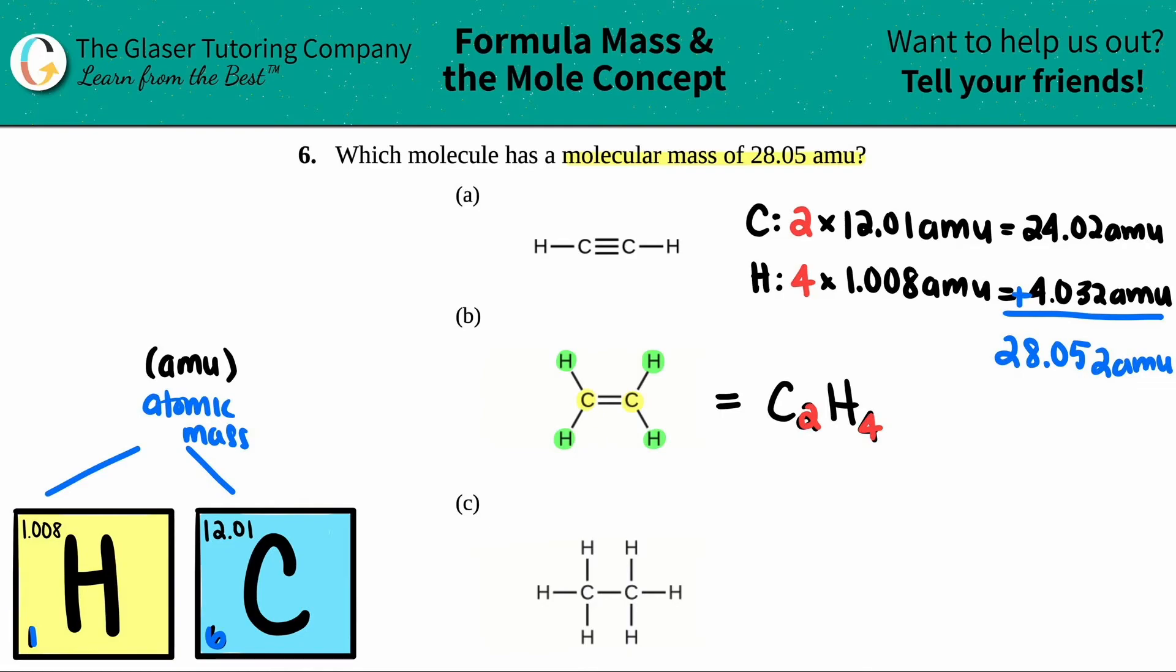Now, technically, since one of the numbers only goes out to the hundredths place, your answer can only go out to the hundredths place. So this 2, technically for sig fig reasons shouldn't be there. So this would roughly be 28.05, and that's what they wanted.